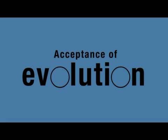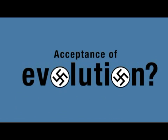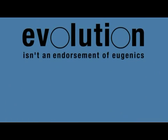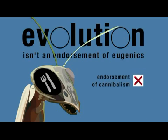Some people feel that an acceptance of evolution implies or leads inevitably towards the desire for supremacist control over the breeding of human beings. But recognising facts about nature doesn't mean you have any wish to apply them to social policy and commit gross violations of human rights. Evolution isn't an endorsement of eugenics, any more than accepting the fact that the females of numerous species kill and eat the males after mating is an endorsement of cannibalism. It's simply a recognition of reality.